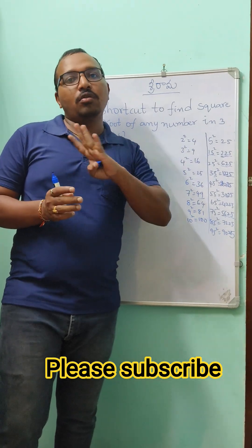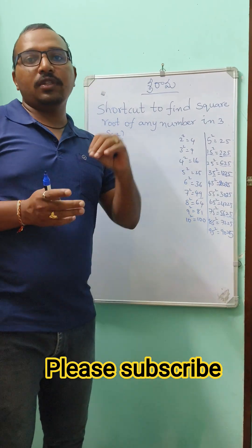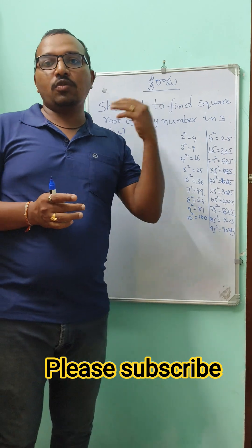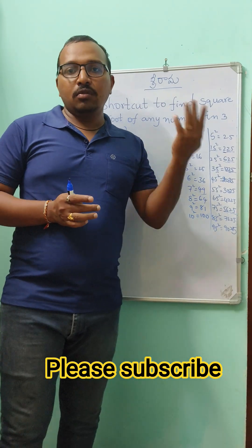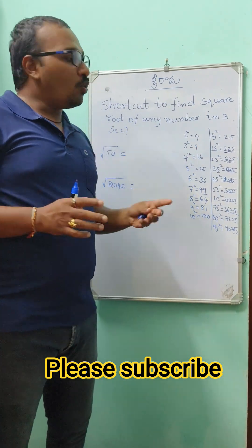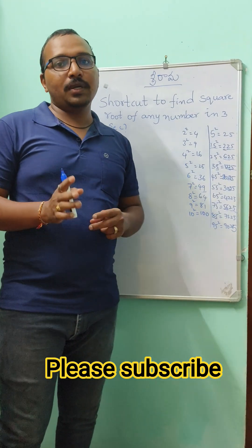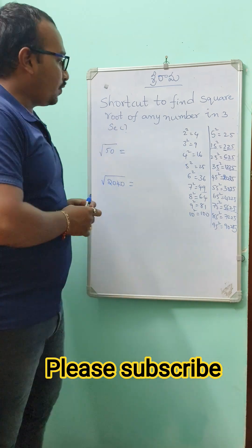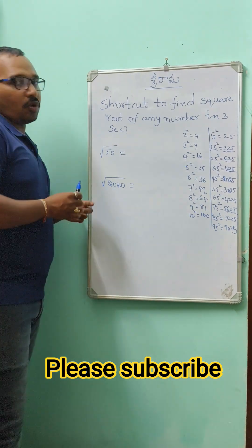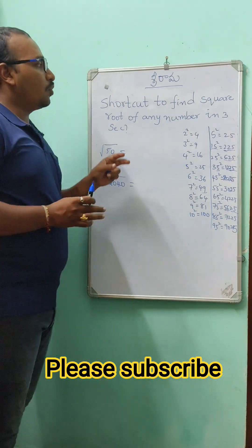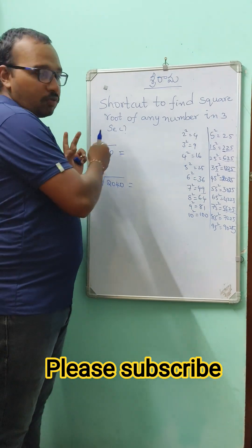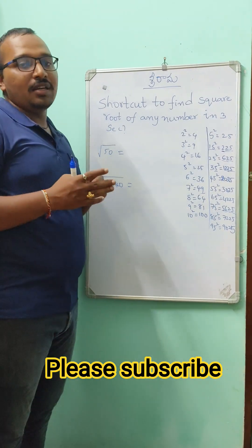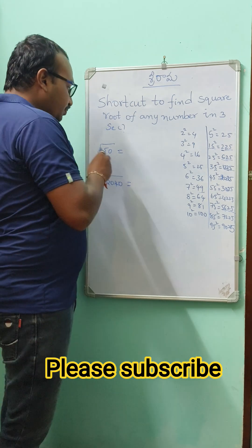This trick is only applicable for numbers ending in 5 — not for 2 squared, 3 squared, or 14. Those numbers ending in 5 are the only ones this trick applies to. Now we are going to get into our main topic: how to find the square root of any number.